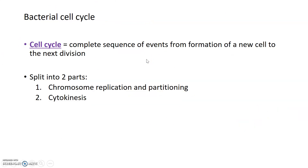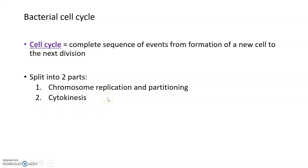The cell cycle in a bacterium is very similar to the definition for a eukaryotic cell cycle: it is the complete sequence of events from the formation of a new daughter cell until it divides again. The bacterial cell cycle is split into two main stages: first, chromosome replication and division or partitioning; and second, the physical division of the cells, or cytokinesis. While we can learn about these two parts separately, in real life the replication and partitioning of chromosomes happens in tandem with cytokinesis.